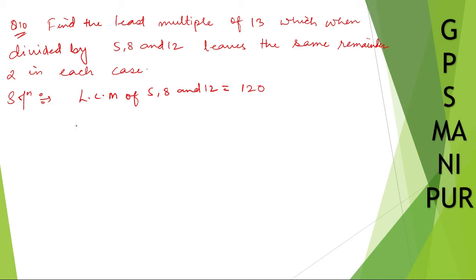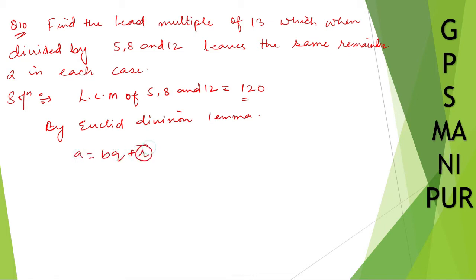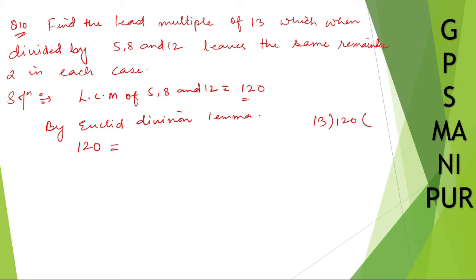Now let us use Euclid's Division Lemma. By Euclid's Division Lemma: dividend equals divisor into quotient plus remainder, written as a = bq + r, where r is the remainder, q is the quotient, b is the divisor, and a is the dividend. So 120 can be written as: dividing 120 by 13, 13 nines are 117, remainder is 3. So 120 = 13 × 9 + 3.